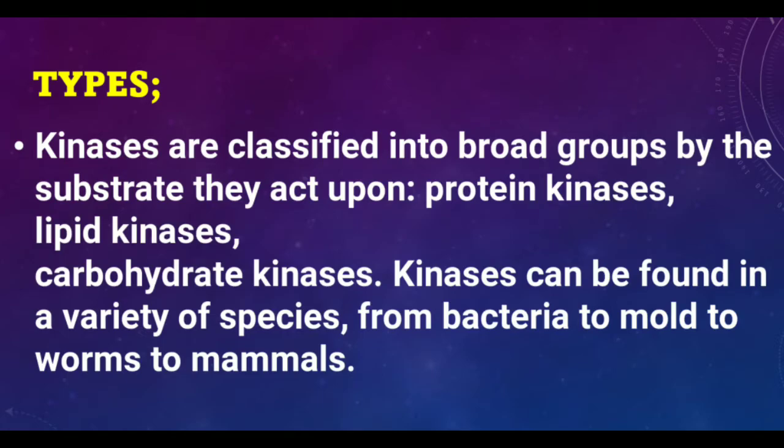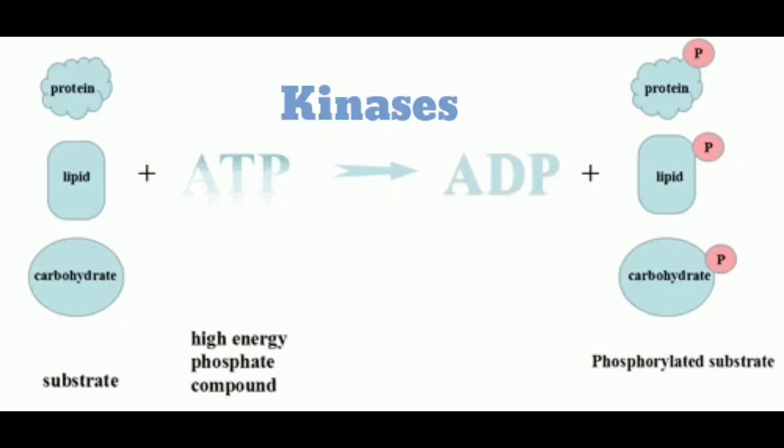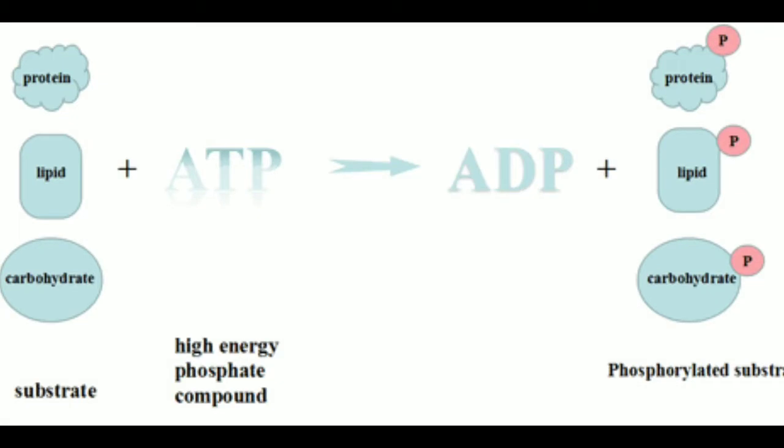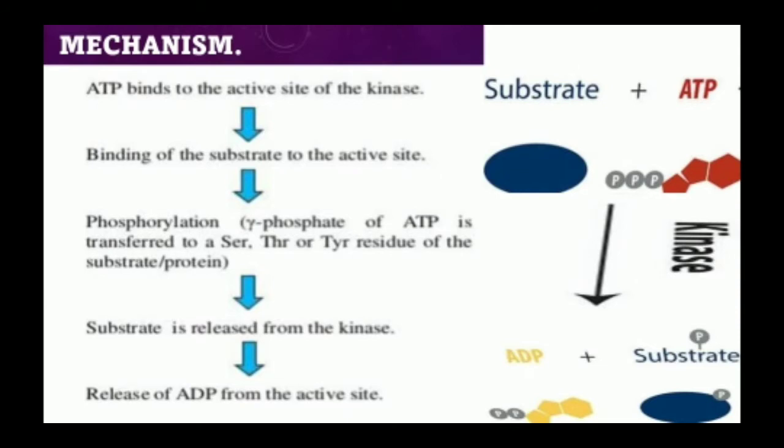This is how a kinase transfers a high-energy phosphate group from ATP to its substrate — be it proteins, lipids, or carbohydrates — to form phosphorylated substrates. Now, what is the mechanism of action of protein kinases?